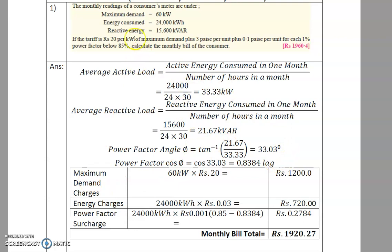Now we calculate the bill. Maximum demand charges: rupees 20 per kW, and maximum demand is 60 kW, so 60 × 20 = rupees 1200. Energy charges: 3 paise per unit, so 2400 kWh × rupees 0.03 = rupees 720.